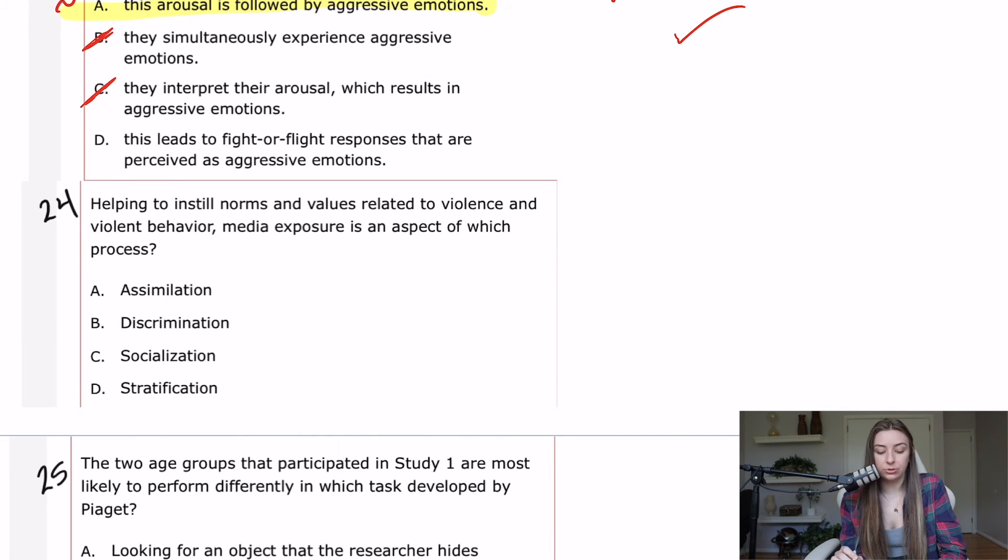24, helping to instill norms and values related to violence and violent behavior. Media exposure is an aspect of which process? You can simplify this down to what process helps instill norms and values? Socialization. If you don't know what any of these other words mean, I would definitely recommend that you learn them, but none of them have to do with instilling norms and values.